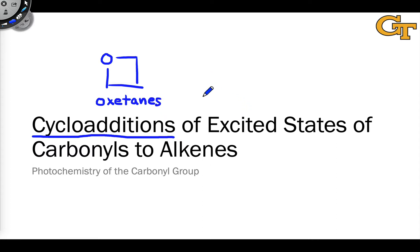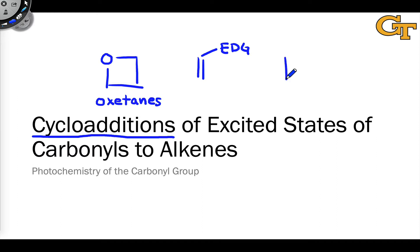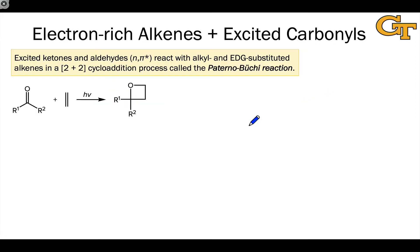There are key differences depending on the electronic nature of the alkene — whether it's electron-rich, substituted by an electron-donating group, or electron-poor, substituted with an electron-withdrawing group. We'll explore some of those differences and look at the more subtle aspects of regioselectivity and stereoselectivity in these reactions.